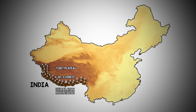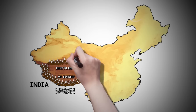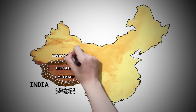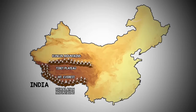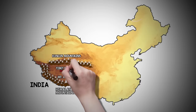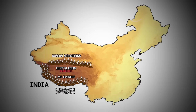The Tibet Plateau nestles between the Himalayan mountains and the Kunlun Mountains in west China and makes up about one-fourth of China's land. The average height of the Tibet Plateau is 14,000 feet above sea level, making it the tallest plateau in the world.